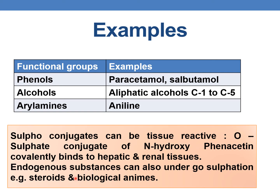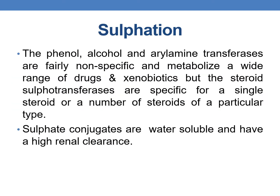Several endogenous substances such as steroids and biological amines can also undergo sulfation. Phenol, alcohol, and arylamine transferases are fairly non-specific and they metabolize a wide range of drugs and xenobiotics. However, steroid sulfotransferases are specific for a single steroid or a number of steroids of a particular type. Sulfate conjugates are more polar — that is, water soluble — and they have high renal clearance.